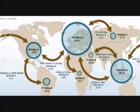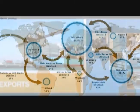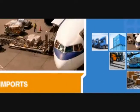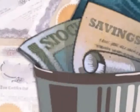The largest part of the Current Account is the balance of trade. The balance of trade is the difference between how much a country imports versus how much it exports. If a country is exporting more than it is importing, it has a balance of trade surplus. However, if a country is importing more than it is exporting, it has a balance of trade deficit, or simply a trade deficit.